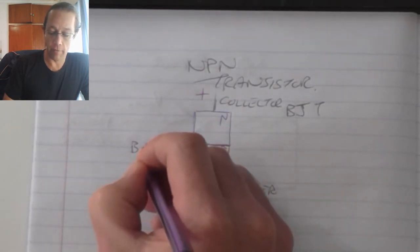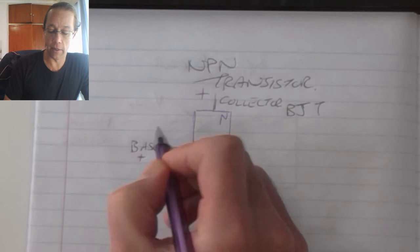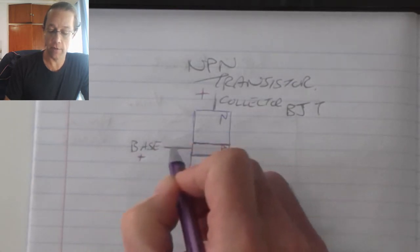So when I supply a voltage that's great enough—in other words, if this is silicon, 0.6 volts.